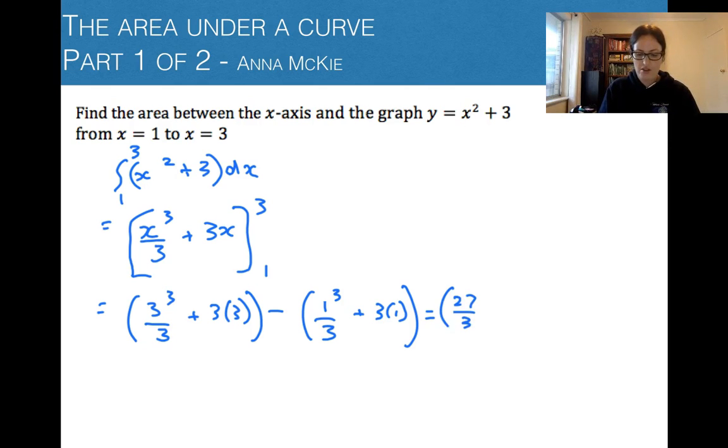We've got 27/3 + 9 taking away 1/3 + 3. That brings us down to 18 - 10/3 which equals 14.6 recurring.